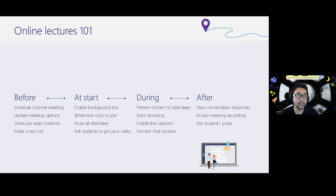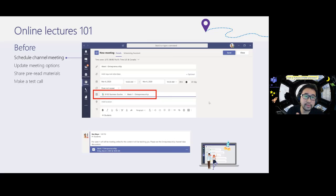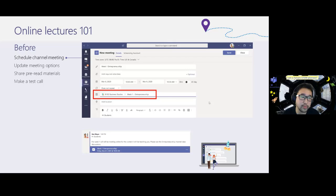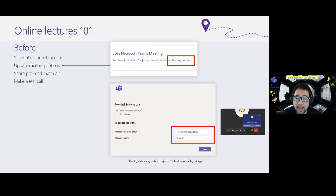Before the meeting, schedule a channel meeting by specifying which channel you're using — if you don't have other channels, just use the general channel. Once you schedule the meeting, a post appears in that channel so every student can see it and all conversations will be there. If you record the lecture, the recording will also be automatically posted in that channel. Everything is captured in one place for review, or for students who couldn't join to participate later.